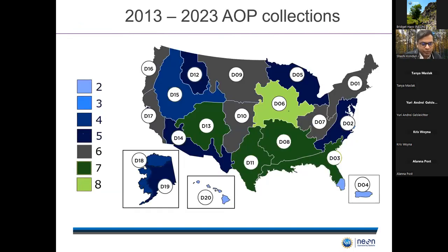This graphic summarizes the number of times each of the 20 ecoclimatic domains have been surveyed by the AOP over the period 2013–2023. Places within the continental U.S. tend to be sampled more often — every site in CONUS is sampled approximately three times out of every five years. Places outside the continental U.S., like Hawaii or Puerto Rico, are sampled once every five years, purely for logistical reasons.